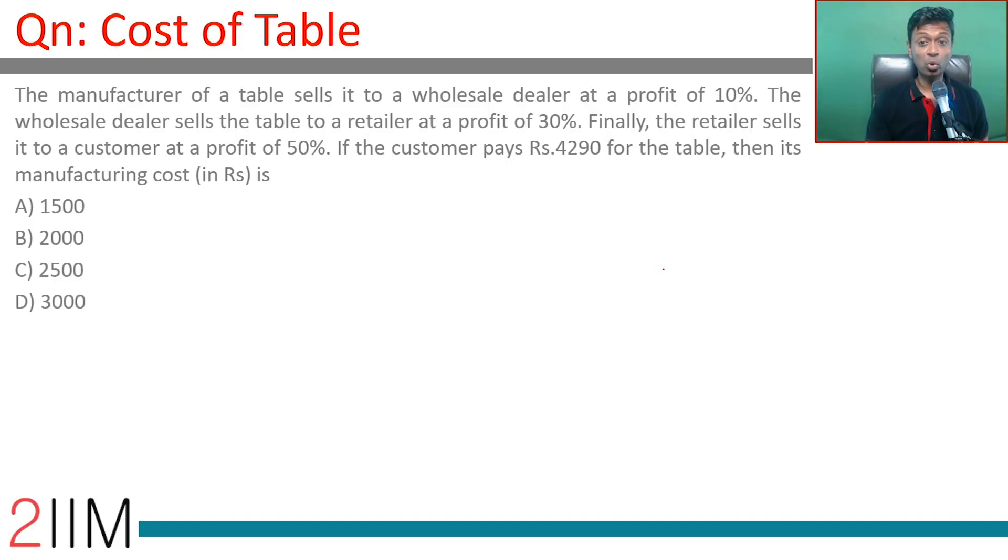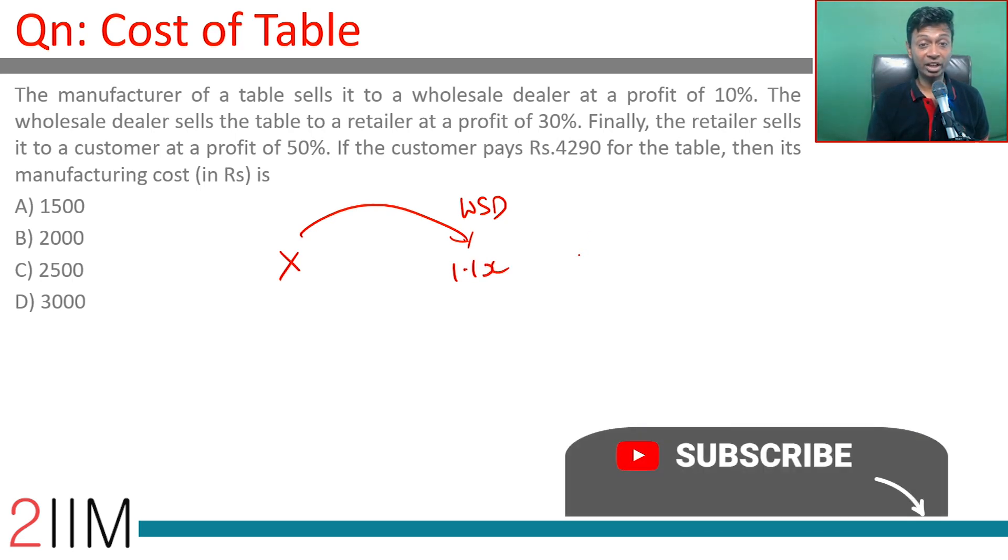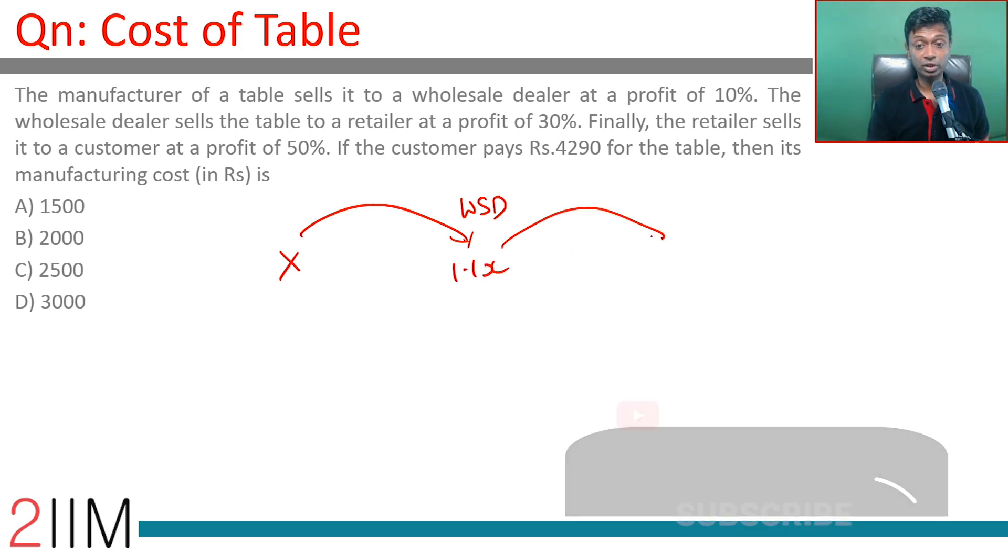A manufacturer of a table sells it to a wholesale dealer at a profit of 10 percent. The wholesale dealer gets it at 1.1x and sells the table to a retailer at a profit of 30 percent.